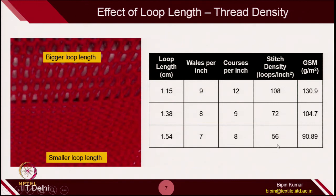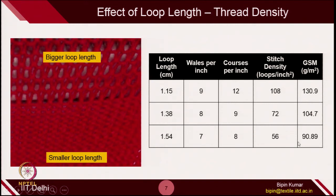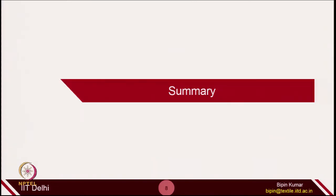When you have lower loop length, the GSM will increase. With smaller loop length you have more loops and therefore more yarn per unit area, so GSM will be higher. When you go for higher loop length — 1.54 cm — you have fewer loops. Although the loop size is bigger, the number of loops is much lower, so the weight of yarn per unit area will be less and the GSM of the fabric will reduce. Bigger loop length gives lighter weight fabric: 90.89 grams per square meter. Smaller loop length gives higher weight per square meter. So with simple modification of loops, you can control the fabric weight and yarn density.